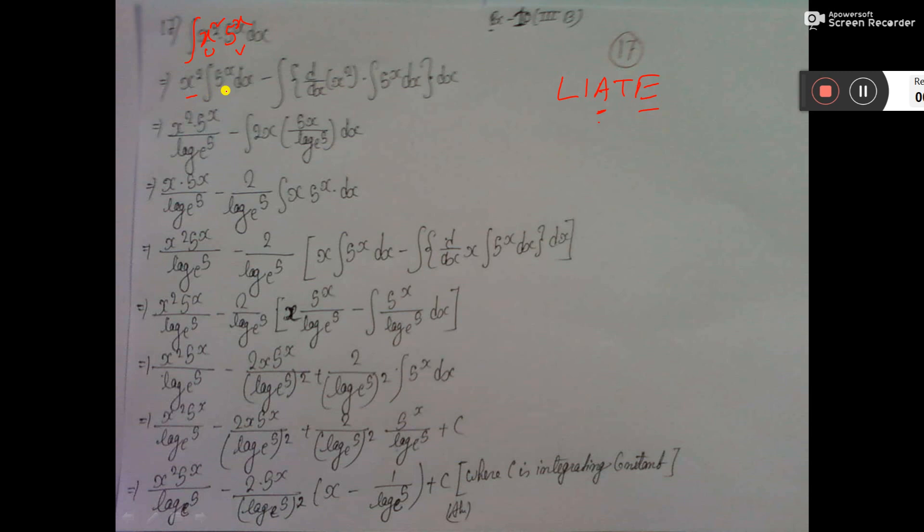Formula u integration v dx minus d dx of u integration v dx total dx. 5 to the power x integration is 5 to the power x divided by log 5 base e. x square differentiation is 2x. Again, 5 to the power x integration I put here.